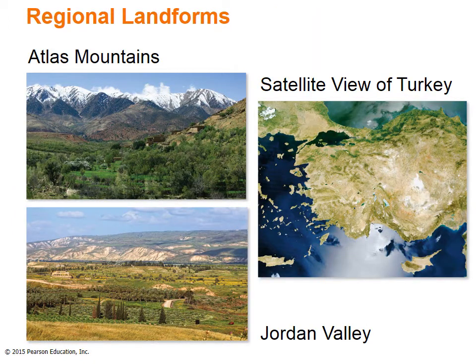Unlike the popular belief that this region is full of hot, dry desert with scattered oases, the physical setting is actually quite complex. The regional terrain varies greatly, with rocky plateaus and mountain ranges more commonly than sandy deserts. The Maghreb region extends across the northern parts of Morocco, Algeria, and Tunisia, and is dominated near the Mediterranean coastline by the Atlas Mountains.